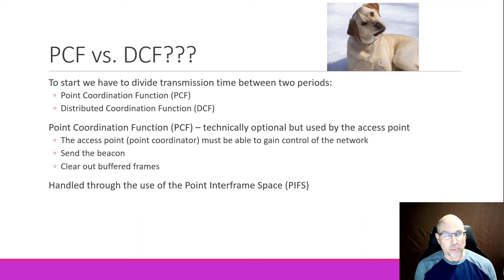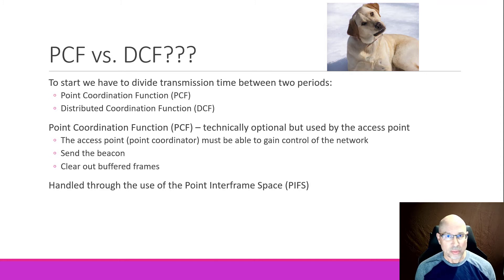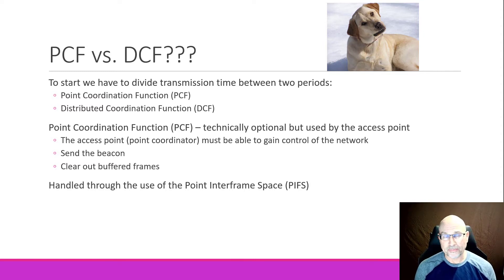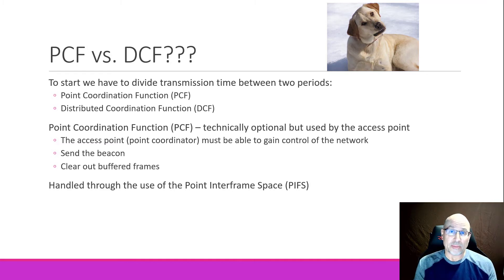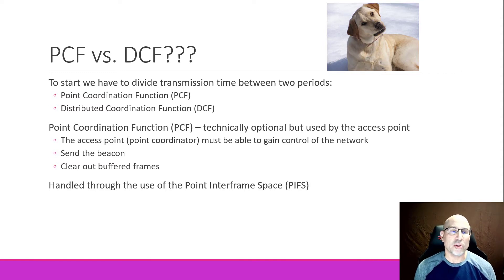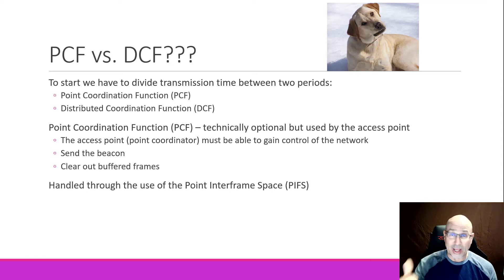The access point is kind of important — it takes care of our transmissions to and from the wired network, but it also issues the beacon. When does it issue the beacon? During the Point Coordination Function — a time period controlled by the access point. The access point also keeps track of nodes going into power saving, and when those nodes are in power saving, you've got to buffer their frames. So the access point needs time to get those frames to destination nodes and to poll individual nodes. The Point Coordination Function is sort of a time when the access point says, everybody out of the pool, I've got stuff to do.